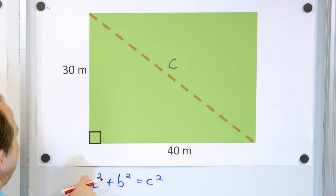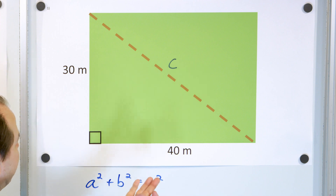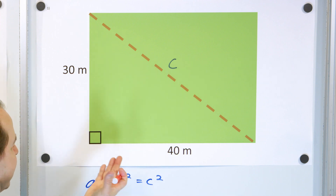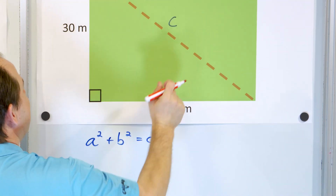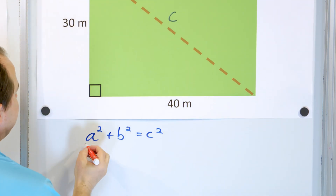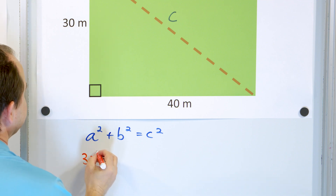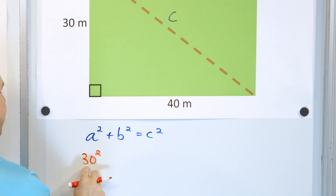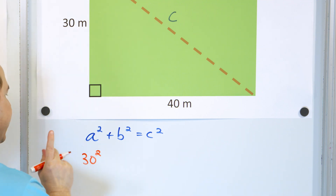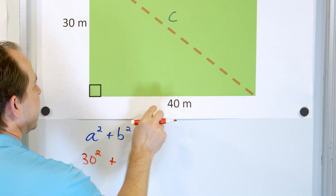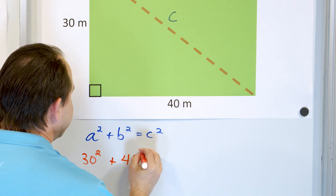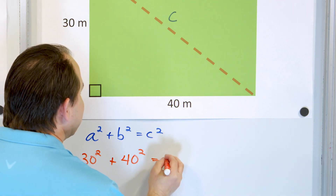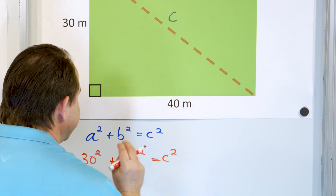It doesn't matter which side is a and which side is b, but c has to be the hypotenuse. So we can say a is 30 meters and b is 40 meters — we won't put the units in the equation, but we know we're dealing with meters. So we get 30² + 40² = c².